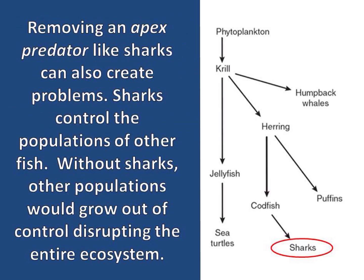Removing an apex predator, like sharks, can also create problems. Sharks control the populations of other fish. Without sharks, other populations would grow out of control, disrupting the entire ecosystem.